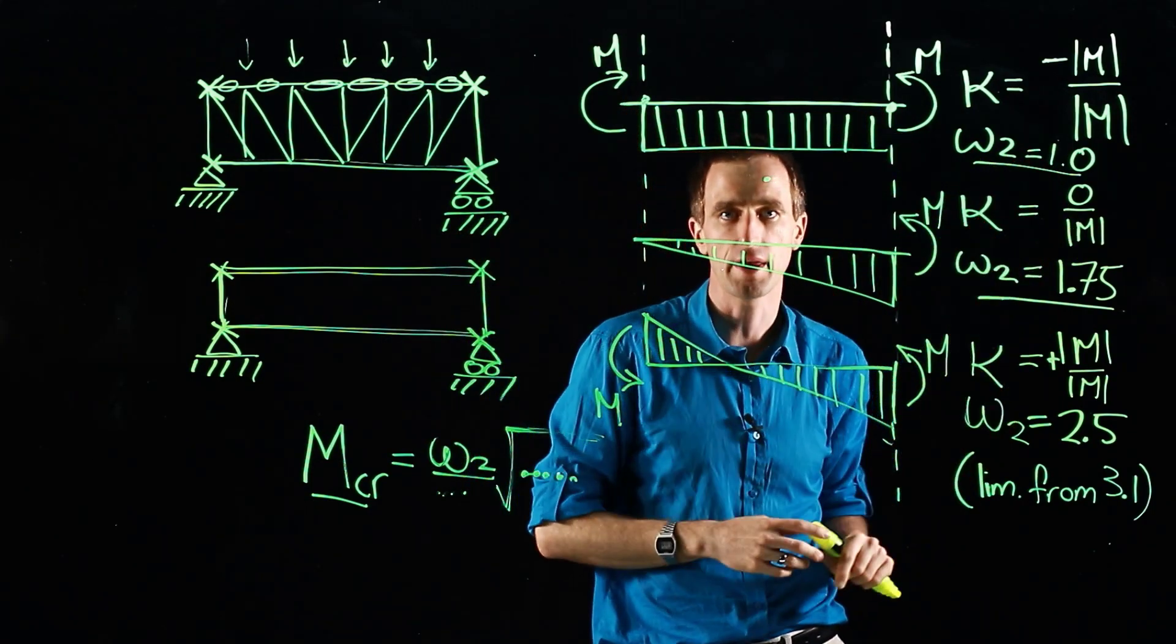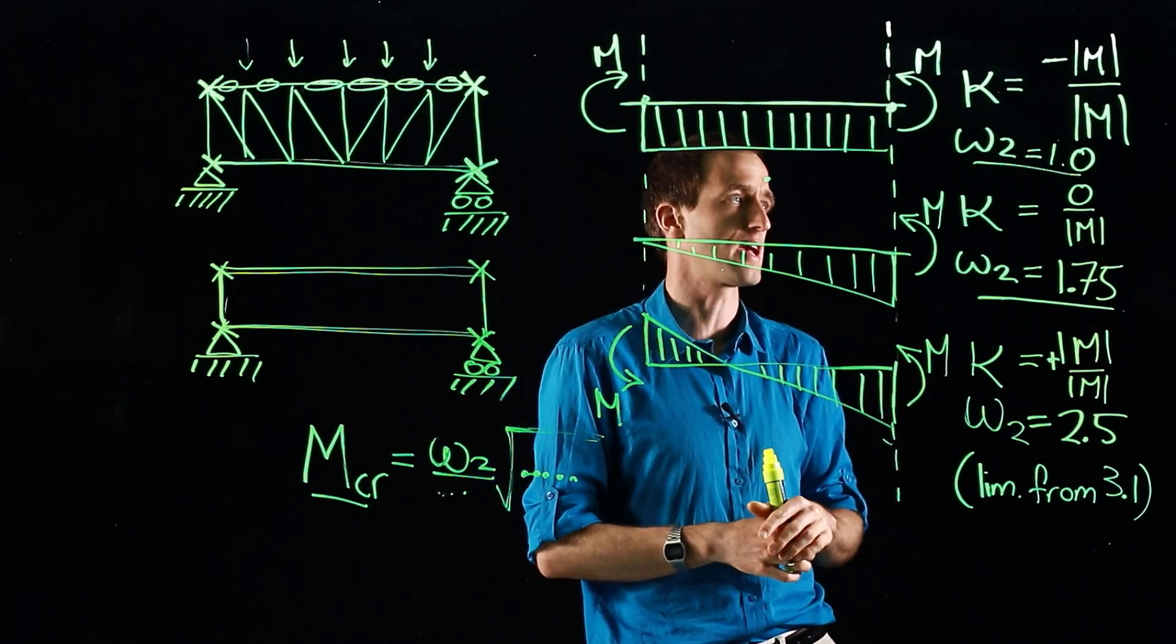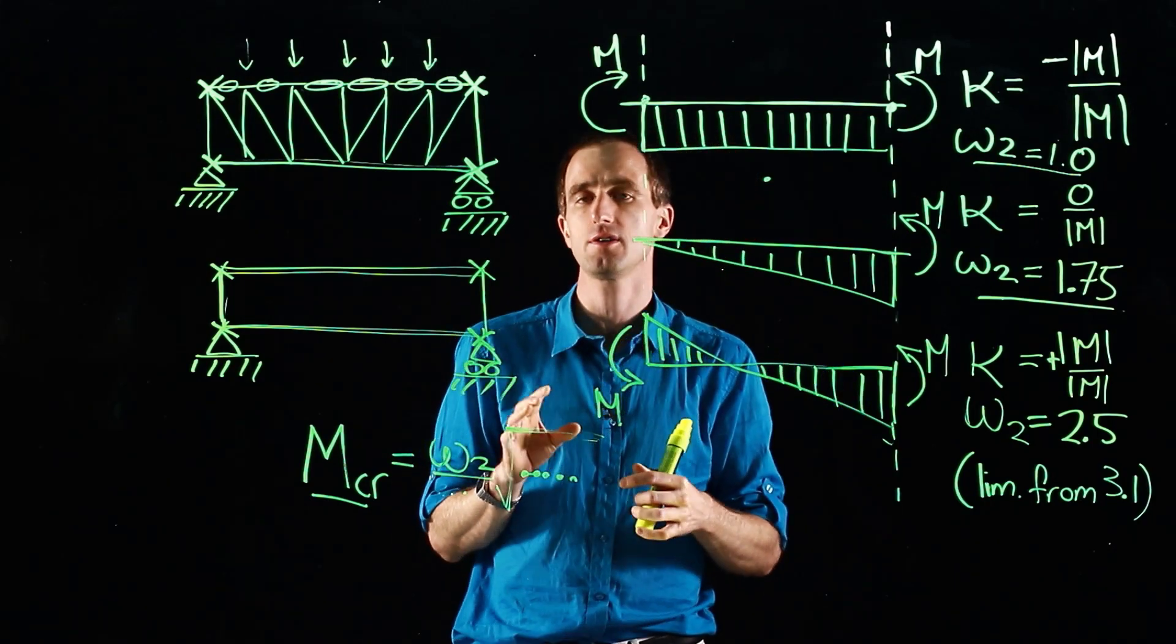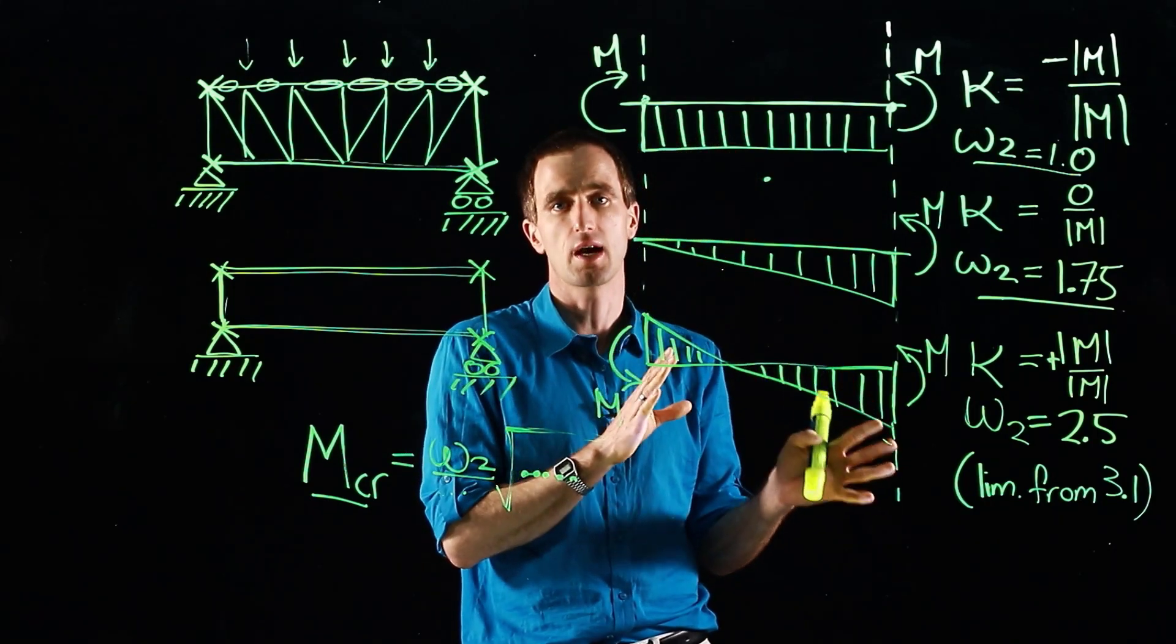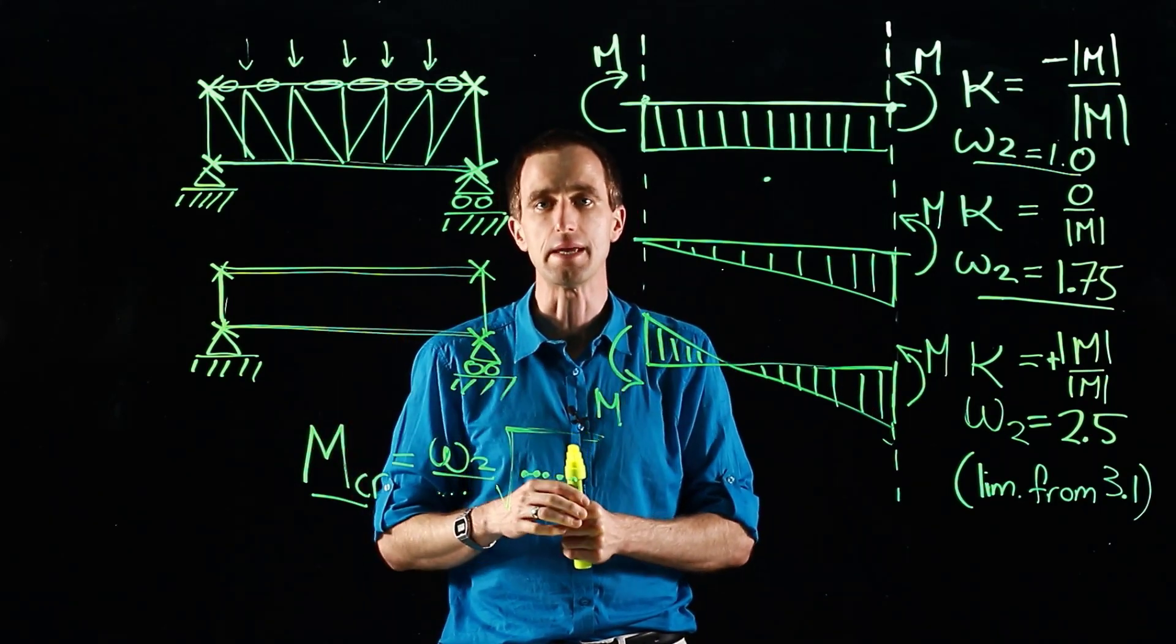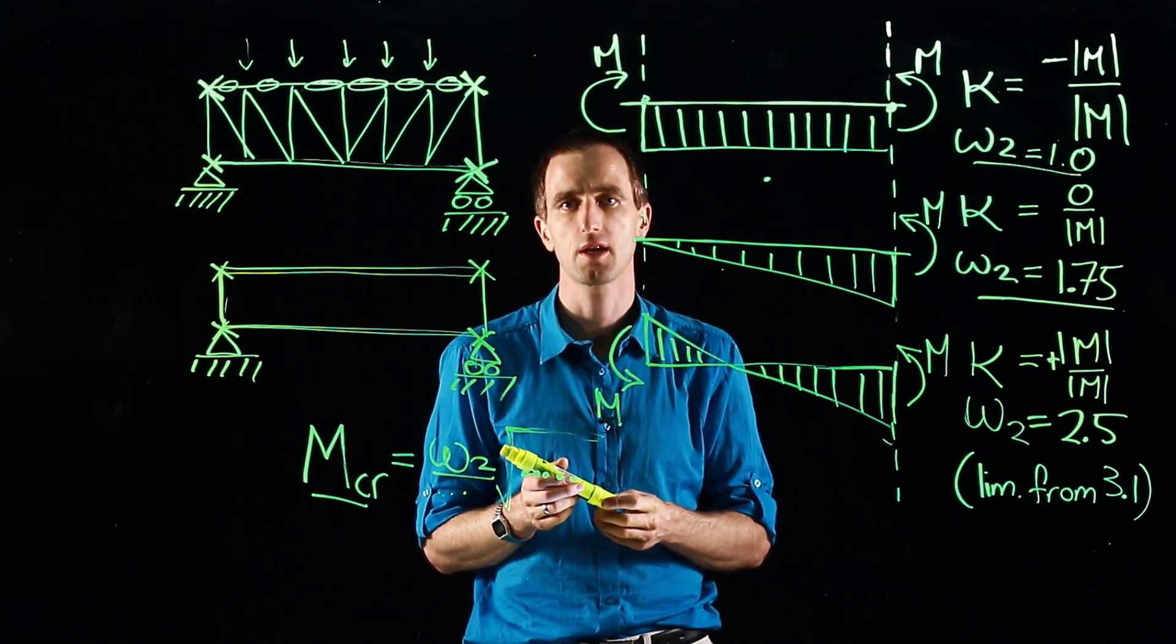There are other methods of calculating this that are a little bit more accurate but for our SANS South African code that is fine for now. So that gives you an overview of how do you take the shape of the bending moment diagram and how does it influence the capacity resistance of a beam specifically by accounting for this omega-2 value in your calculation. Thank you.